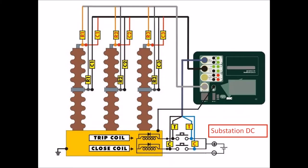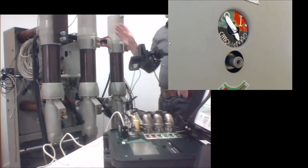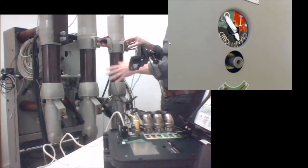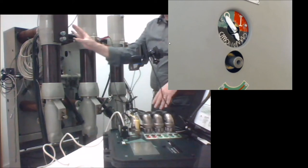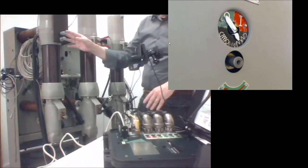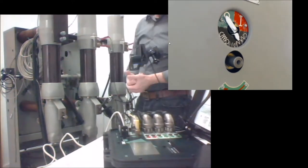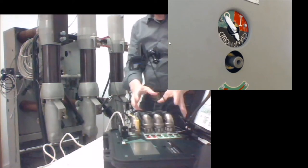I want to describe how the connections to the main contact are made. On the screen we can see a diagram showing the multi-connectors going from the instrument. The first multi-connector goes to the coil control in the breaker. The second one goes to the main contacts. And the last one also goes to the main contacts for contact resistance measurement.